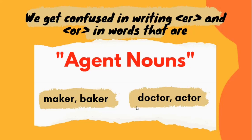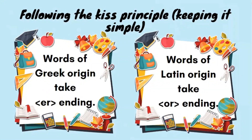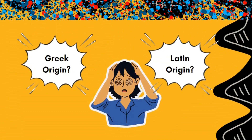The problem is how would we know — or how will we teach kids — when they should write ER and when they should write OR in words like these? For that, we can follow the KISS principle. KISS principle means keeping it simple. It says words of Greek origin take ER ending for the ER sound, and words of Latin origin take OR ending. Now, who on earth will say that this was simple? Who knows what are words of Greek origin and what are words of Latin origin?